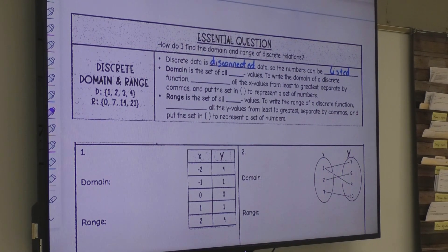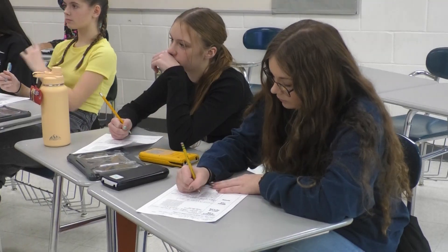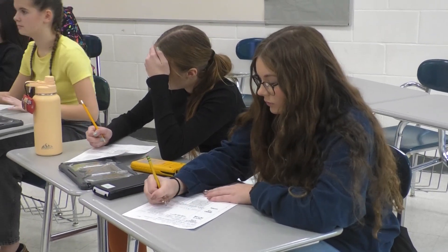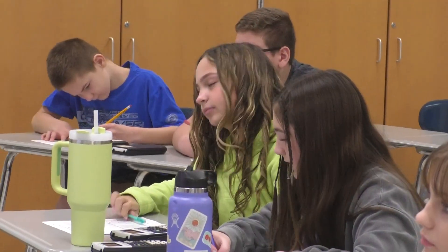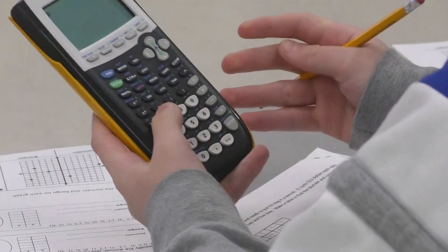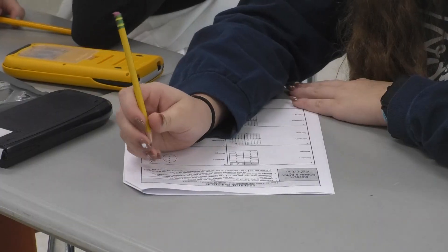A discrete graph is discrete data that's disconnected, so they're just individual points. Tomorrow when we start talking about continuous graphs, they're going to be lines, curves, circles—they're going to all be connected.